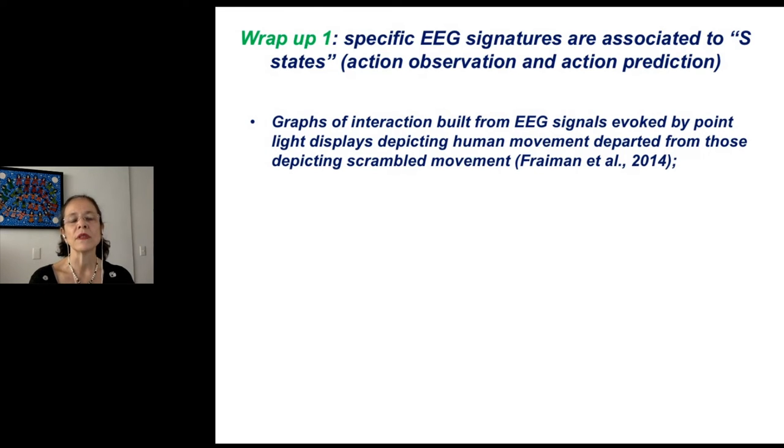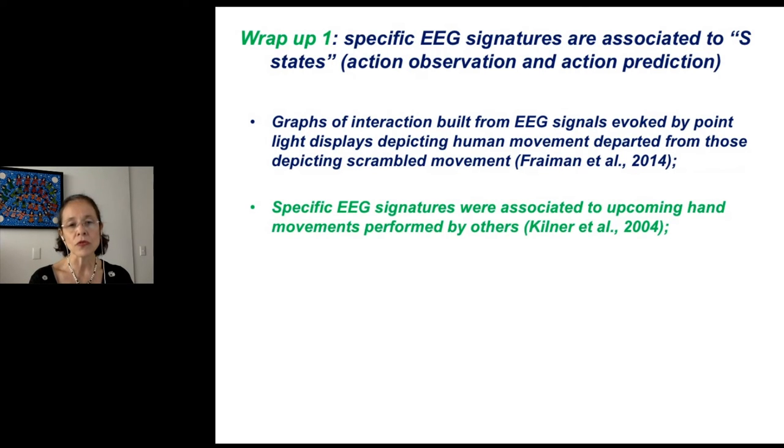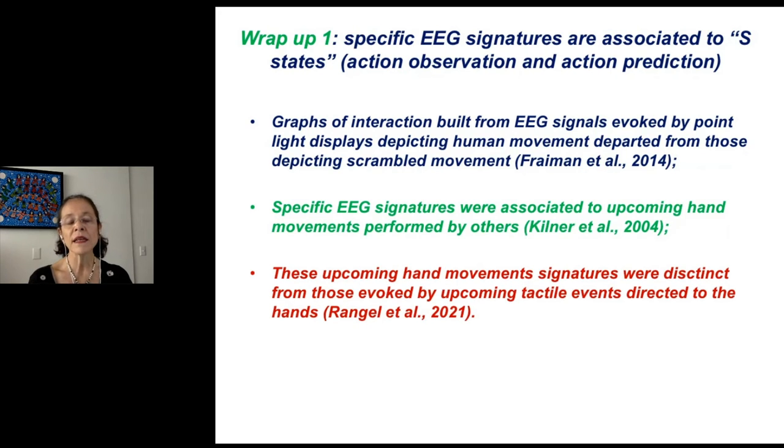I have shown that graphs of interactions built from EEG signals evoked by point light displays depicting human movement deported from those depicting scrambled movement. I also showed that specific EEG signatures were associated to upcoming hand movements performed by others. And finally, I have shown that these upcoming hand movement signatures were distinct from those evoked by upcoming tactile events directed to the hands. So, it seems possible to identify specific signatures associated to the contents of an observed predicted movement from the EEG signal.